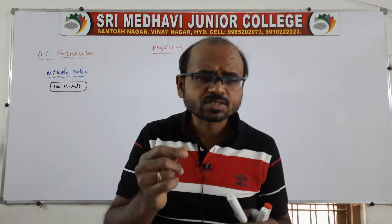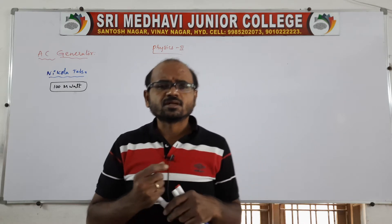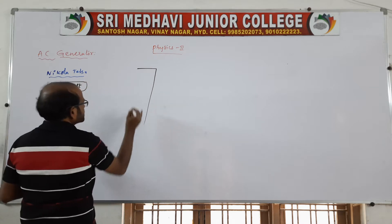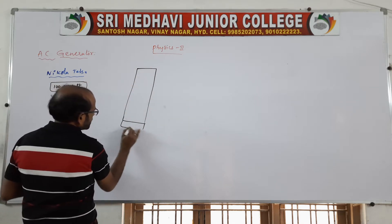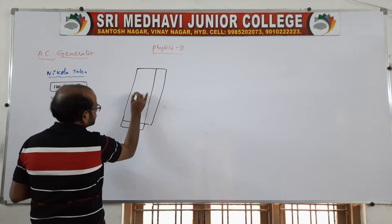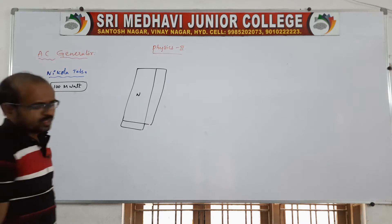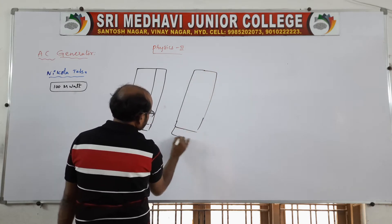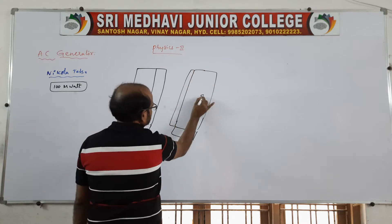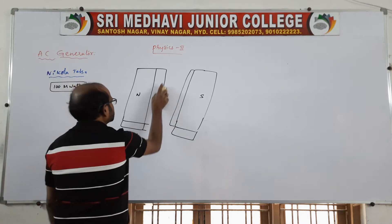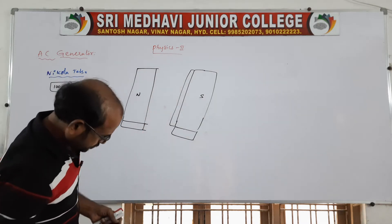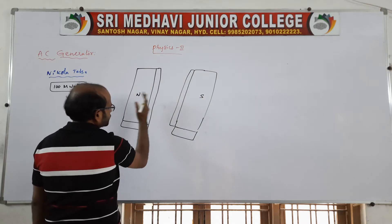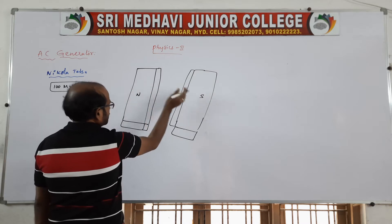The AC generator works on the principle of electromagnetic induction. It consists of field magnets which we can call the north and south poles of a bar magnet — one magnetic pole is north, and the other is south. These north and south poles produce a radial magnetic field. This is the first essential part. Between the two poles there is a magnetic field produced by the field magnets.